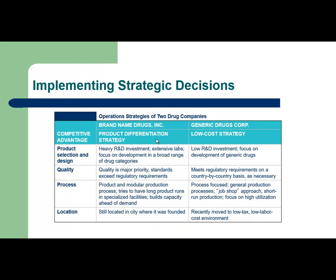This slide and the next show a comparison between two companies and the strategy approach based on product competitive advantage. Operation strategies have been implemented in all decision areas for two drug companies — one that provides a brand name drug and the other that provides a generic drug. The generic drug follows a low-cost strategy and the brand name follows a product differentiation strategy.